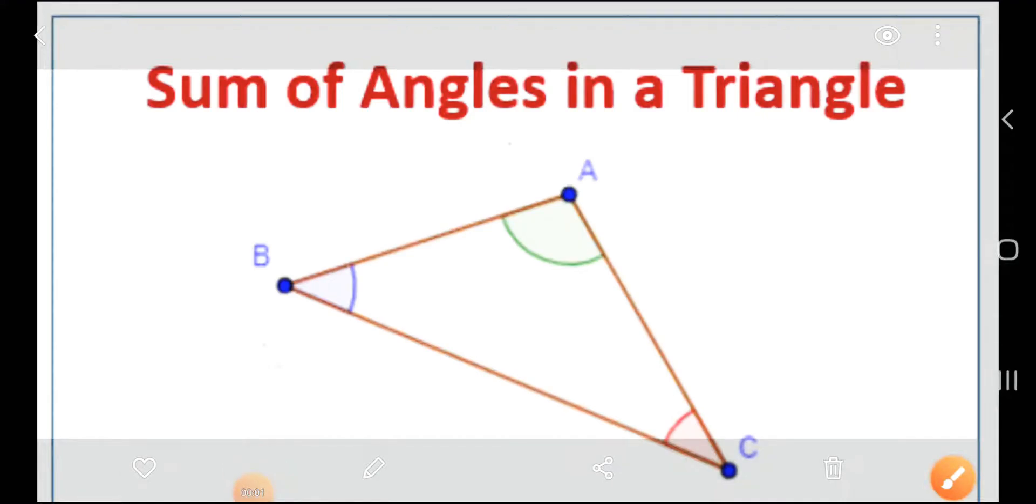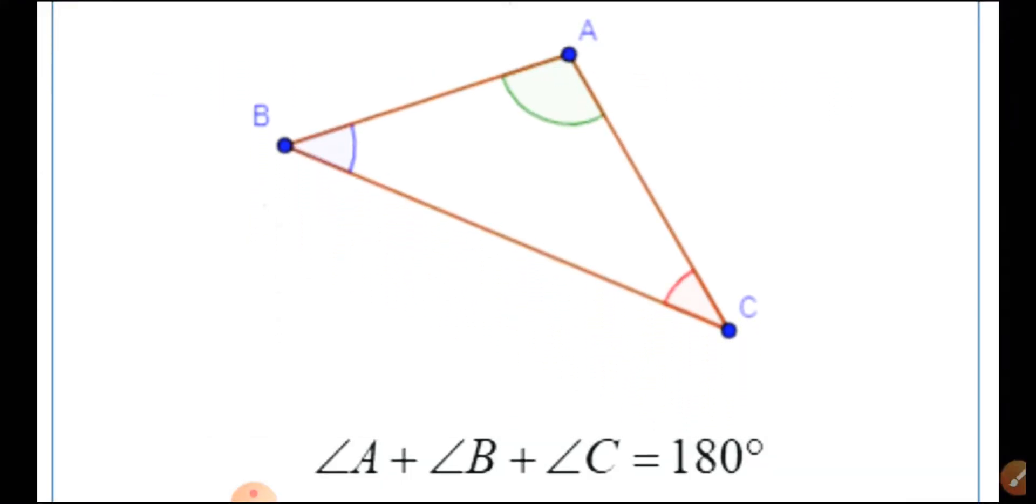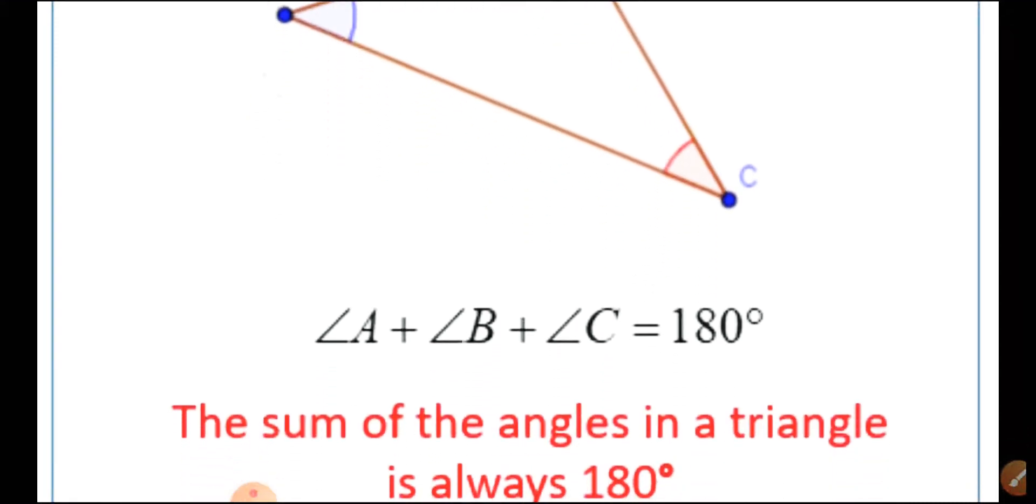There is another triangle video on the sum of angles in a triangle. You can see this is a triangle here. Angle A and angle B plus angle C, the sum of angles ABC altogether is 180 degrees.